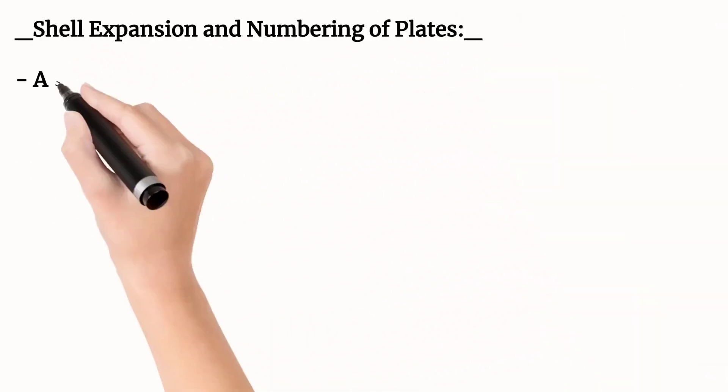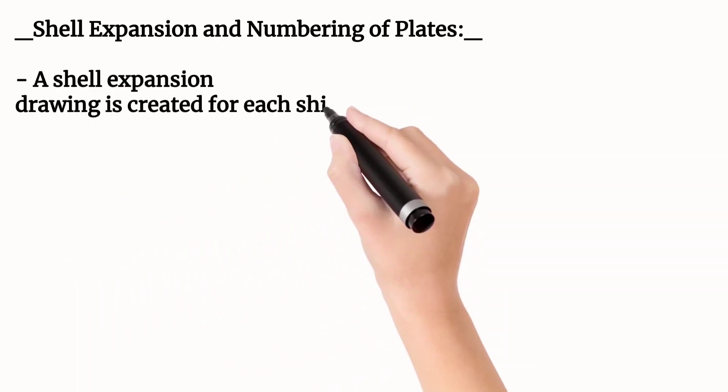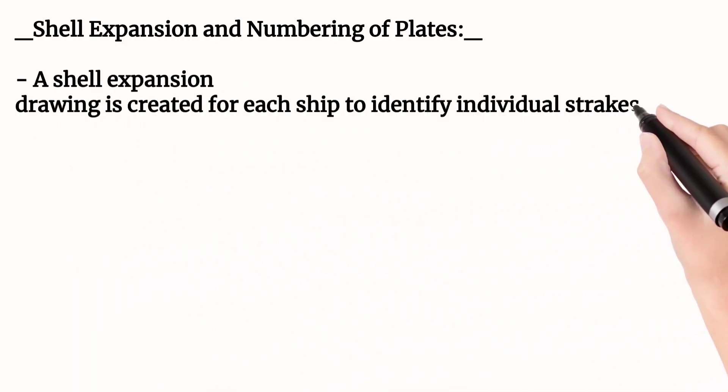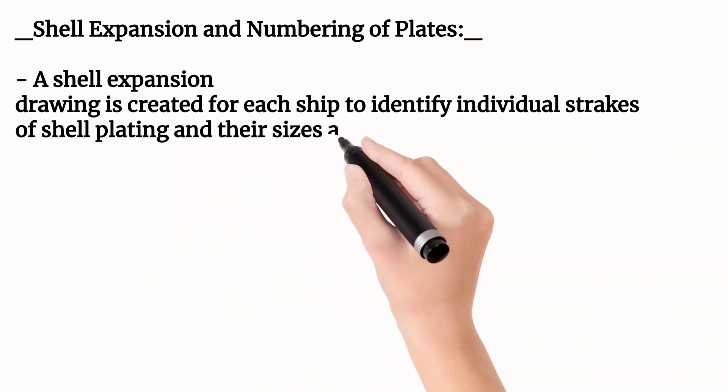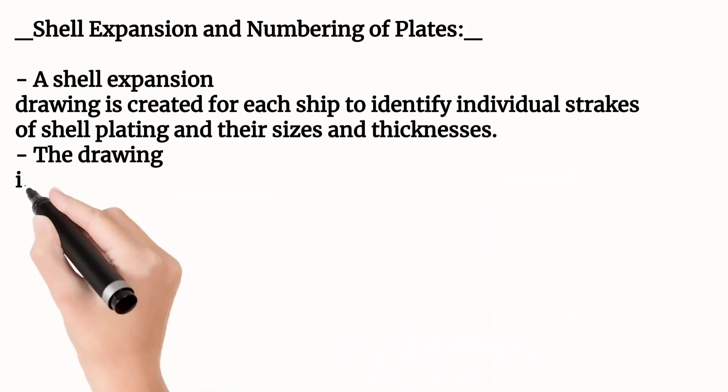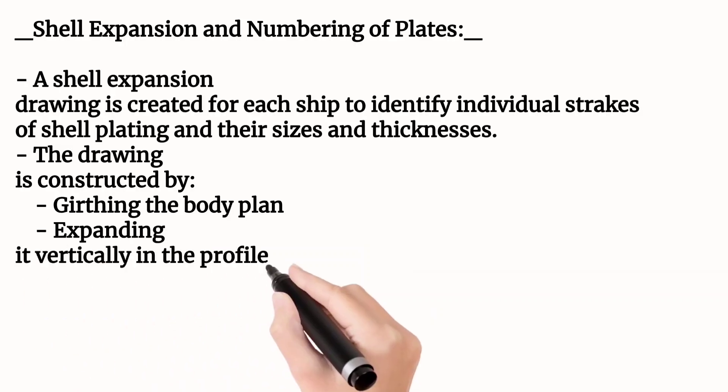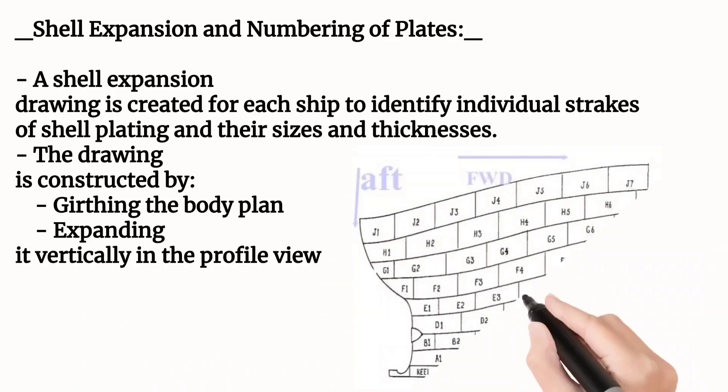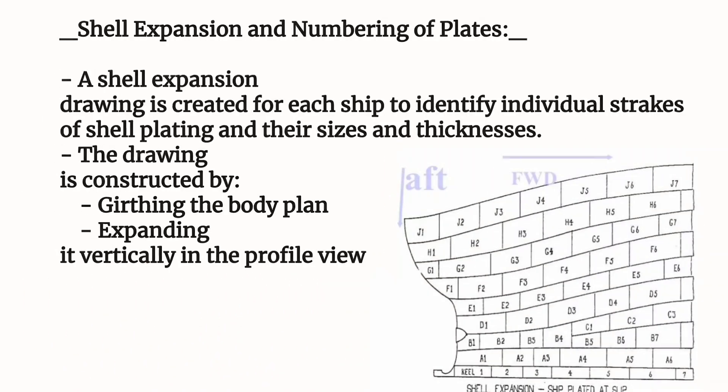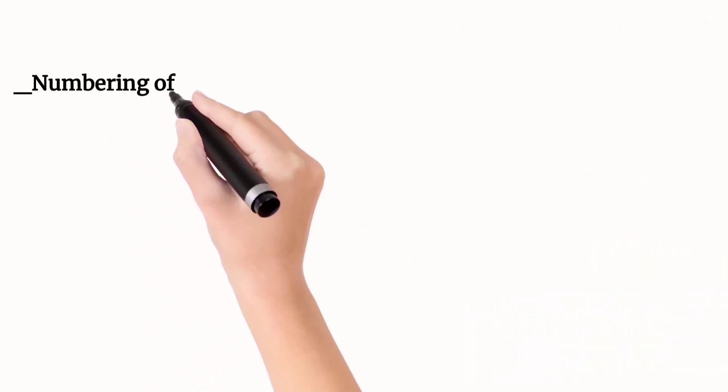Now let's discuss about shell expansion plan and numbering of plates. The shell expansion drawing is created for each ship to identify individual streaks of shell plating and their sizes and thickness. The drawing is constructed by girthing the body plan, expanding it vertically in the profile view. In this picture you can see the shell expansion plan.